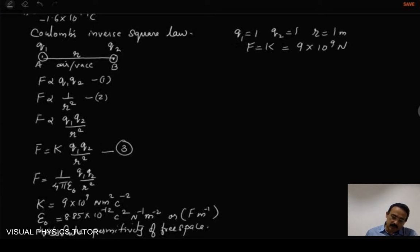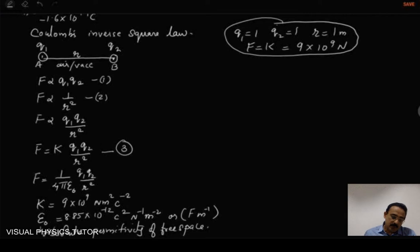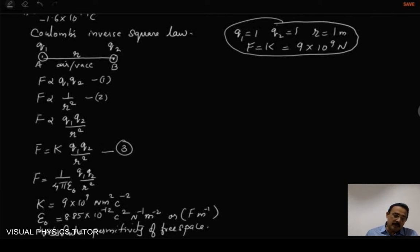Based on these parameters we can define one coulomb. If equal and similar charges Q1 and Q2 are equal in magnitude and they are placed at a distance of 1 meter apart in free space, then they experience a force of 9 into 10 to the power 9 Newton, and then the charge is said to be of 1 coulomb.